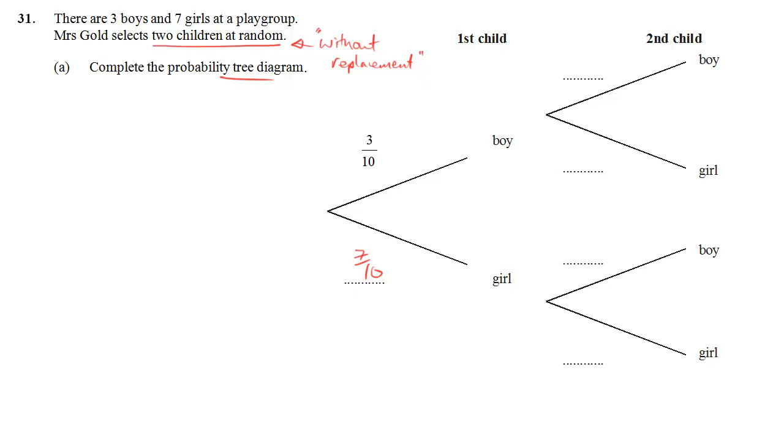When you pick the second child, you're not picking from ten children anymore, you're picking from nine. So all the probabilities are now out of nine. I can go around putting nine as the denominator for all my fractions. If the first child was a boy, then there's only two boys left, so two ninths is the probability there. There's still seven girls, so that's seven ninths. If the first child's a girl, there's still all three boys left, so three ninths, but there are only six girls left. So six ninths is the probability of getting a girl.